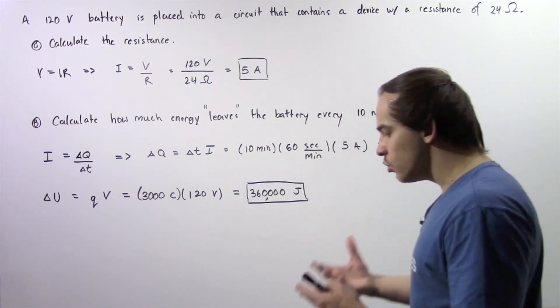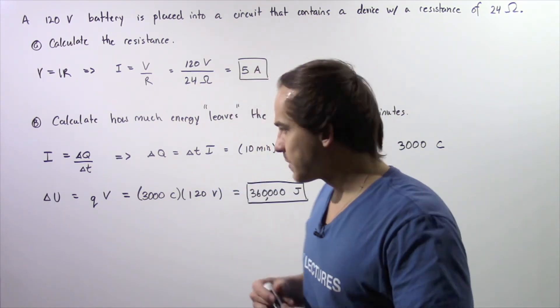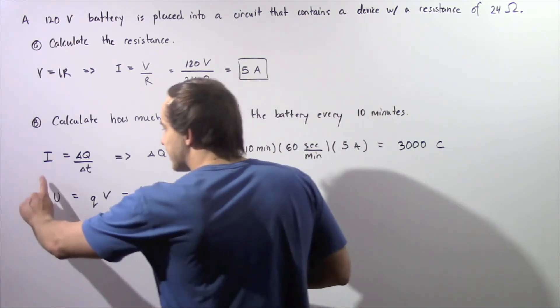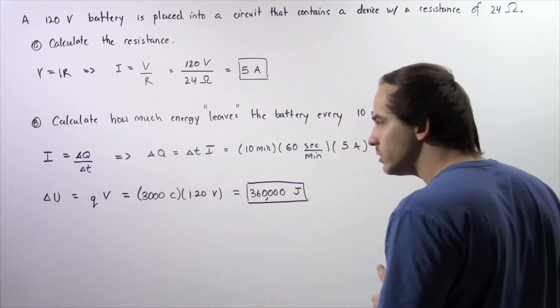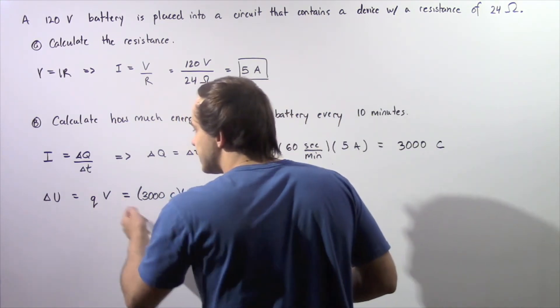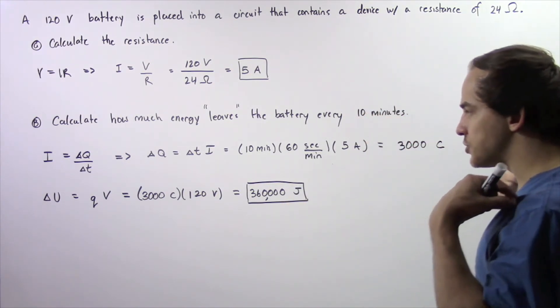So 3000 coulombs leaves our battery every single 10 minutes. Recall that the change in our energy is equal to the product of the voltage and our quantity of electric charge that travels through that voltage difference.